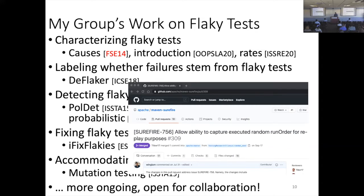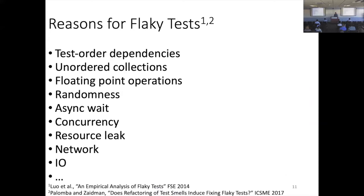As a reminder, flaky tests non-deterministically pass or fail. What are the causes? One is test order dependency, which I'll focus on today — but that's not the only cause. Others include: unordered collections (iterating through a set with no defined order), floating point operations (not being associative), randomness and random seeds, concurrency, asynchronous communication, resource leaks, and network availability — if your network is up or down, your test may pass or fail.